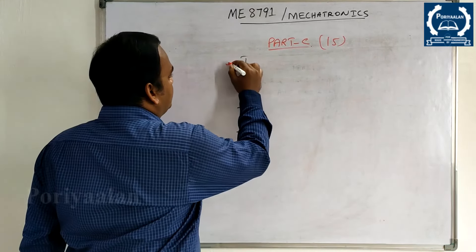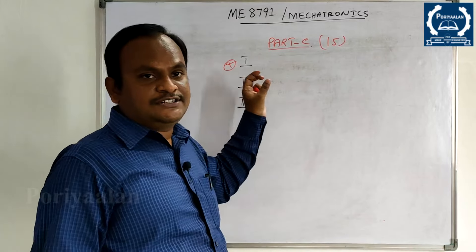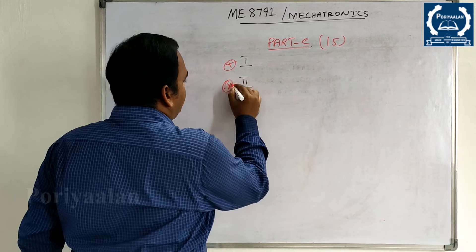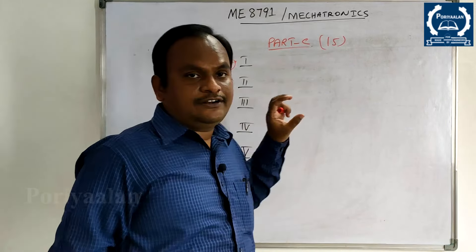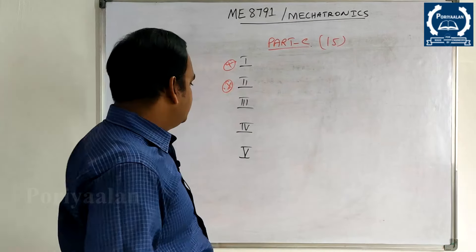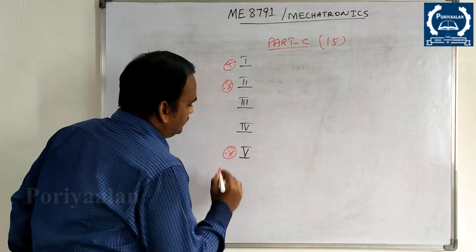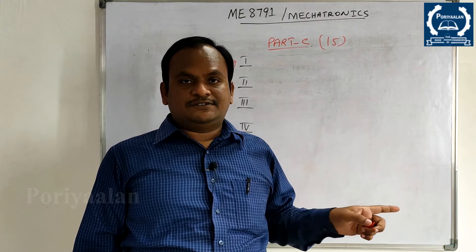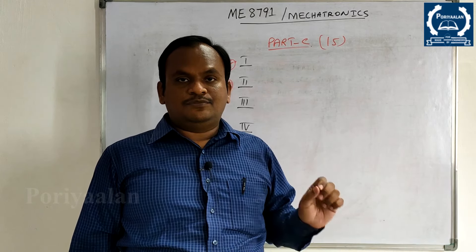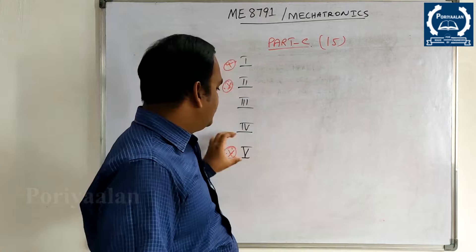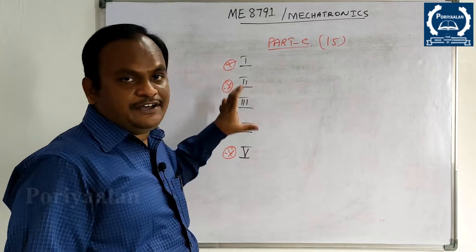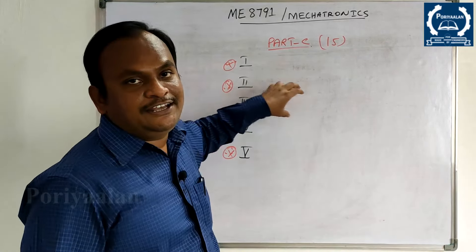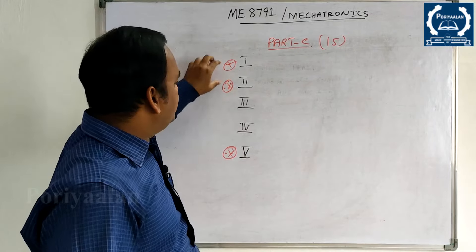For the 1st unit, there will be sensors and transducers questions. For the 2nd unit, there will be 8085 topics. The case studies in the 5th unit are very important — 3 case studies: pick-and-place robot, engine management system, and automatic car barrier system. Focus concentration should be on the 1st unit, 2nd unit, and 5th unit. You can pass it.